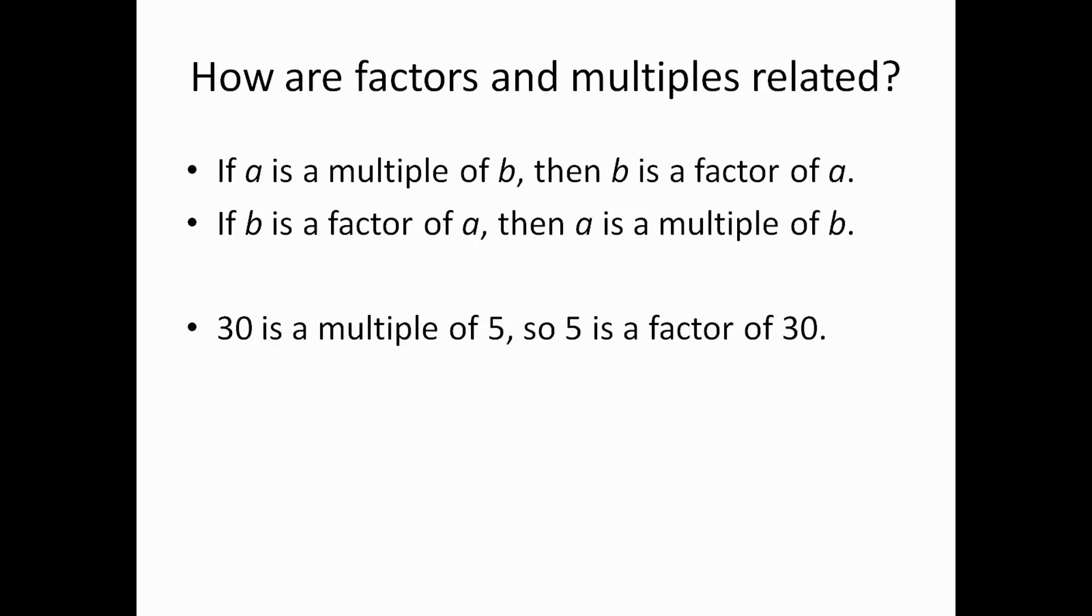So, for example, we know 30 is a multiple of 5. And, because of that, we can conclude that 5 is a factor of 30. So, you can kind of flip it like that. The other way, we could say 7 is a factor of 21. So, therefore, 21 is a multiple of 7.